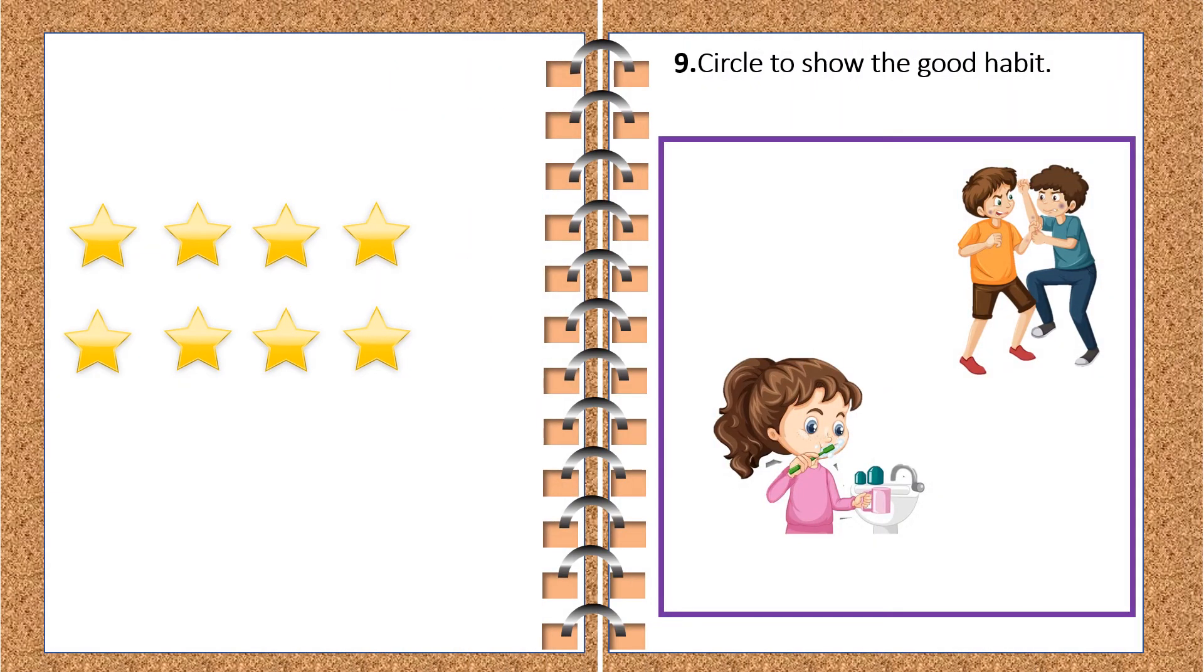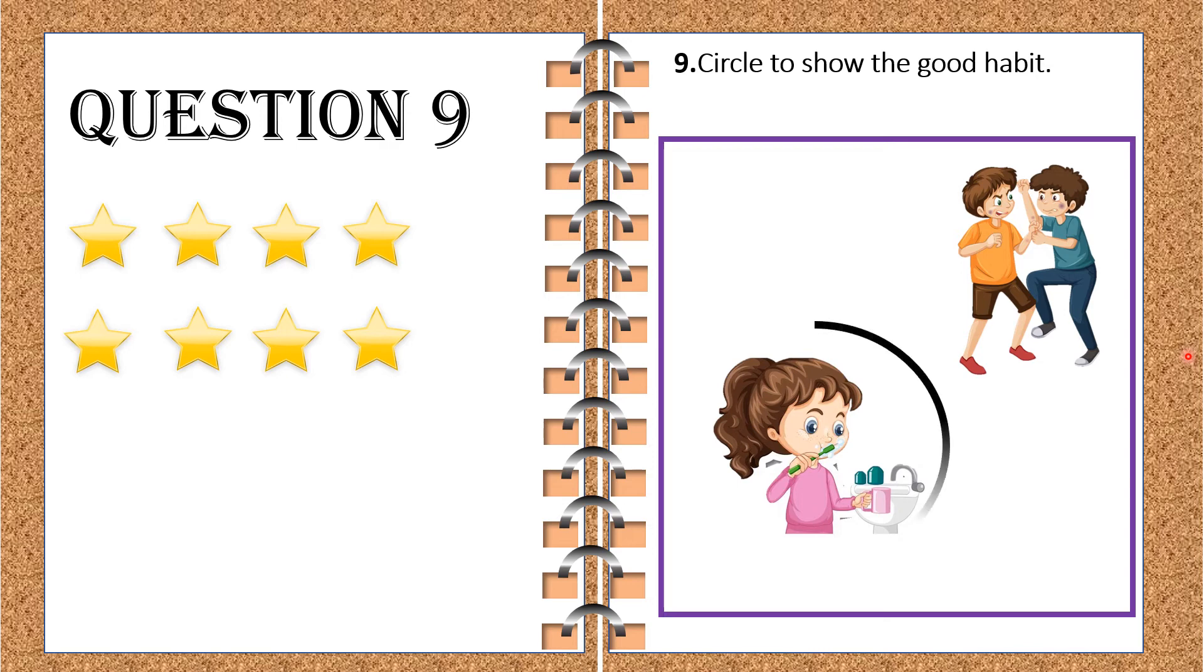Now, the next question, question number nine. This question says, circle to show the good habit. Now, what do these two pictures say? One picture says these boys are fighting, and this girl is brushing her teeth. Which is a good habit? Let's circle it. Yes. Brushing teeth is a good habit, and not the fighting. Great. Did you get this star? Yes. I'm sure.